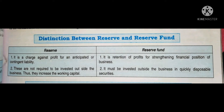The first difference: under the reserve column, a reserve is a charge against profit for anticipated or contingent liabilities. We create a reserve so that if in the future there are contingent or anticipated liabilities, we can meet them.